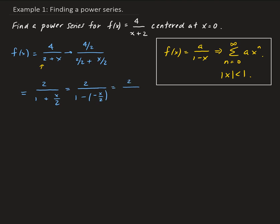So now notice that we have a minus in the denominator here — we have 1 minus x. So this is the same thing as 2 over 1 minus negative one-half x. So now we have everything we need to write our series. We have that a is 2, and then this part here — the negative one-half x — that is acting as r. So the function can be represented as an infinite series with a equals 2 and then we have negative one-half x raised to the n power.